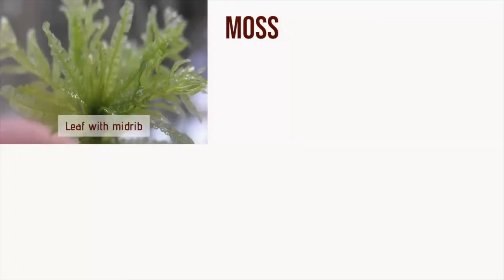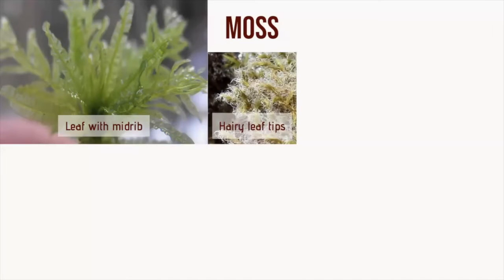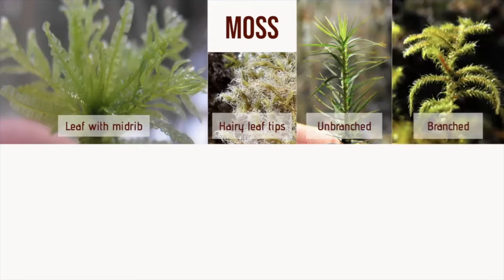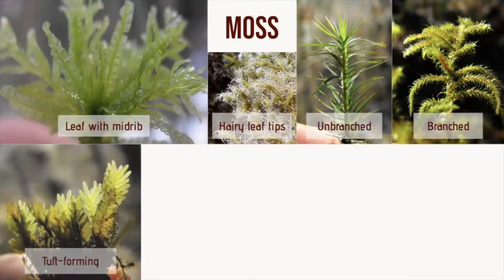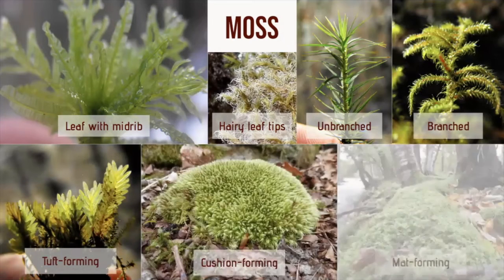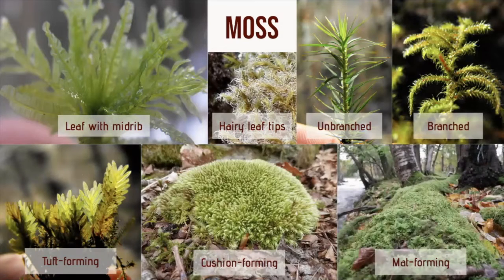Mosses have stems and leaves and can range from a few millimetres to over 40 centimetres tall. The simple leaves are generally only a single cell thick, so they're translucent and you can almost look straight through them. They have a nerve or midrib in their leaf, and some living on exposed rocky places often have a hair tip to their leaf, which helps reflect the sun's heat and aids desiccation tolerance. Some mosses are unbranched and others are branched, and in terms of life forms we get some which form tufts, some which form cushions, and some which form mats.